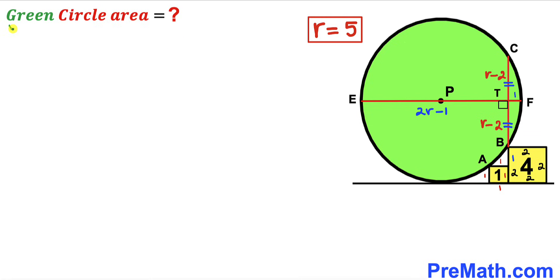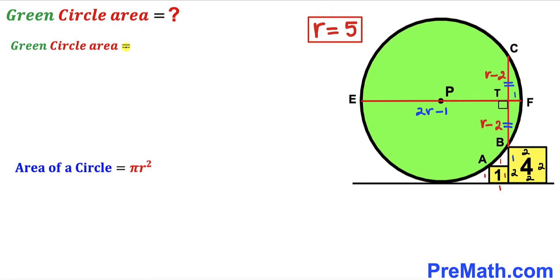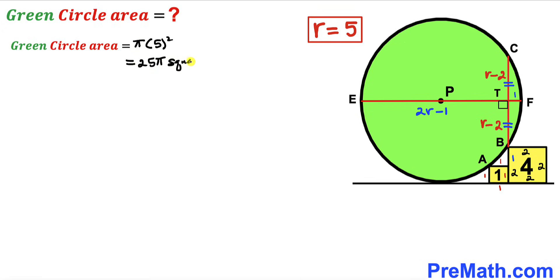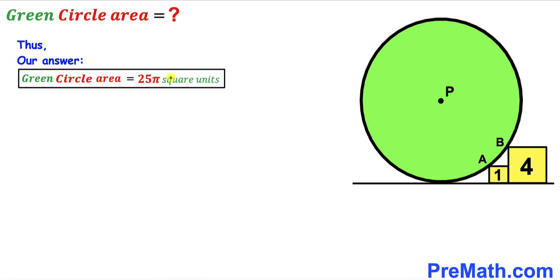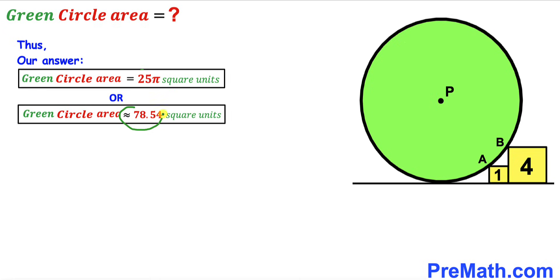For the final step, we calculate the area of the green shaded circle. Recalling the formula: area equals π r squared, and substituting r equals 5, the area equals π times 5 squared, which equals 25π square units — approximately 78.54 square units. That is our final answer. Thanks for watching and please don't forget to subscribe to my channel for more exciting videos!